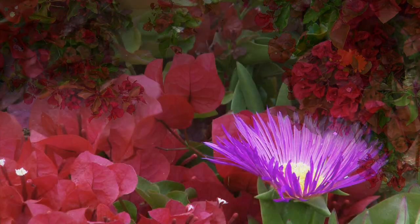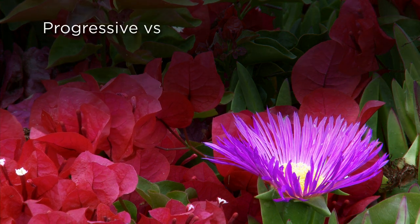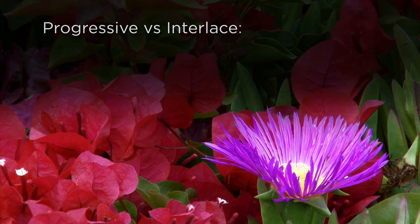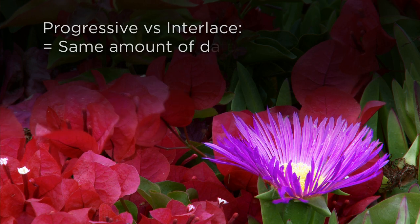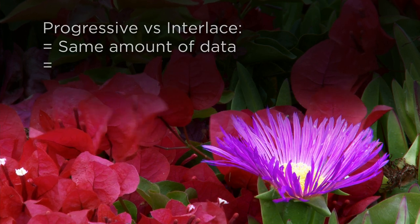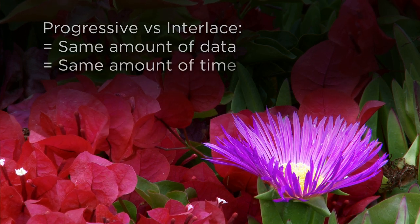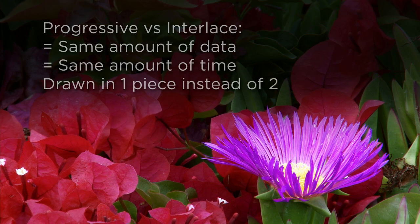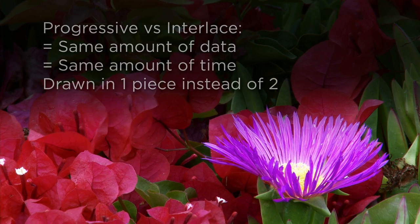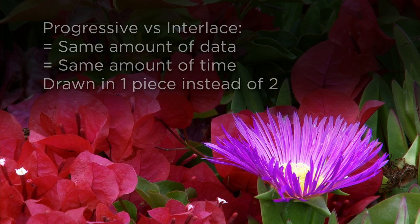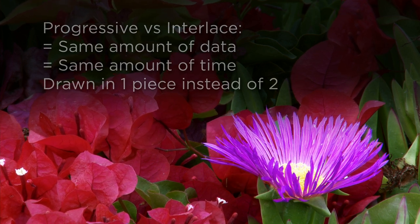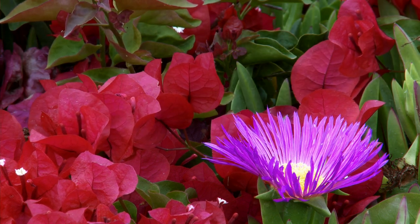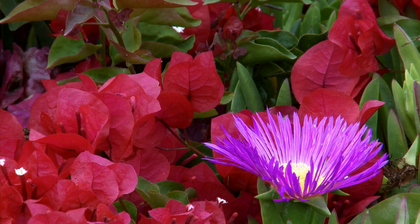While some might believe that progressive is twice the amount of data as interlaced, it's actually the same amount of information shown in the same amount of time but presented in a different way. Older displays based on tubes are interlaced, but all modern flat panel displays are progressive by nature and will play both progressive and interlaced content.